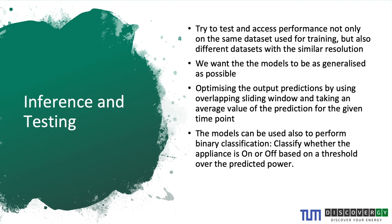I used overlapping time windows with sizes ranging from 300 to 1,500 seconds. During testing, since each time step had n number of predictions from overlapping windows, I optimized results by taking the mean across those n predictions for each time step. These models can also be used for binary classification — determining if an appliance was on or off based on a threshold — since I use a one-versus-rest classifier with one model trained per appliance.